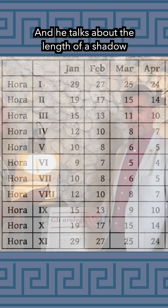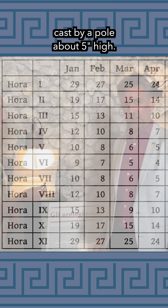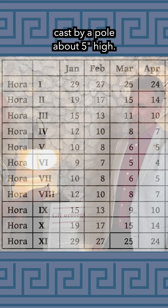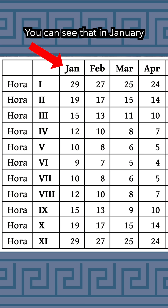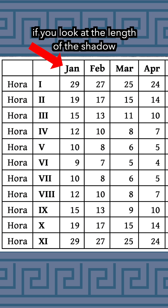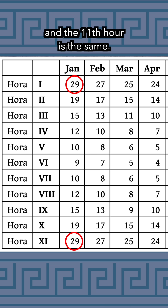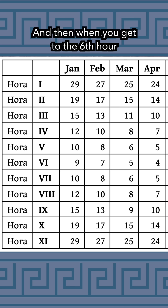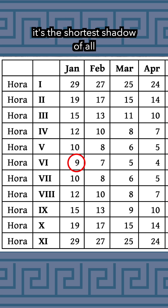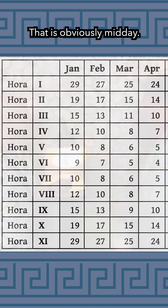And he talks about the length of the shadow cast by a pole about five feet high. You can see that in January, the length of the shadow at the first hour and the eleventh hour is the same. Then the second and the tenth is the same, the third and the ninth, the fourth and the eighth, the fifth and the seventh. And then when you get to the sixth hour, it's the shortest shadow of all and it's not paired with anything else. So that is obviously midday.